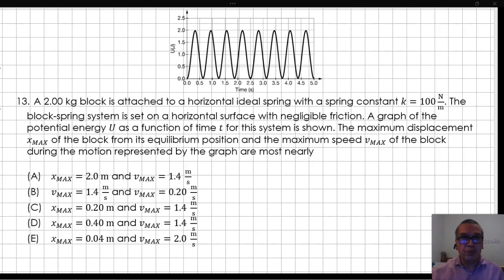A 2.0-kilogram block is attached to a horizontal ideal spring with a spring constant k equal to 100 N/m. The block-spring system is set on a horizontal surface with negligible friction.